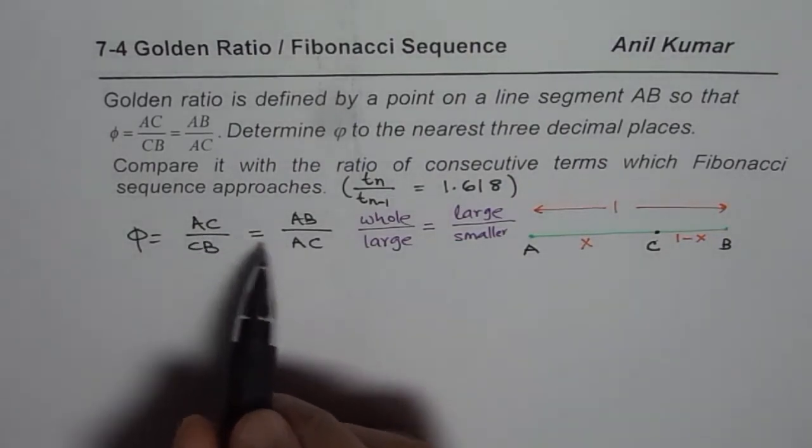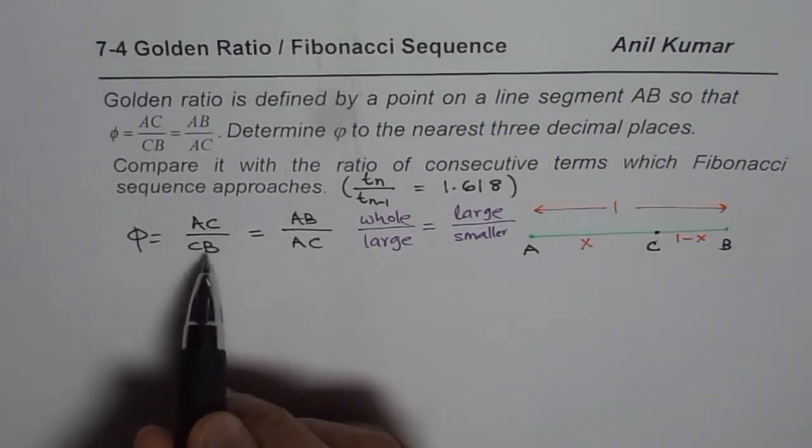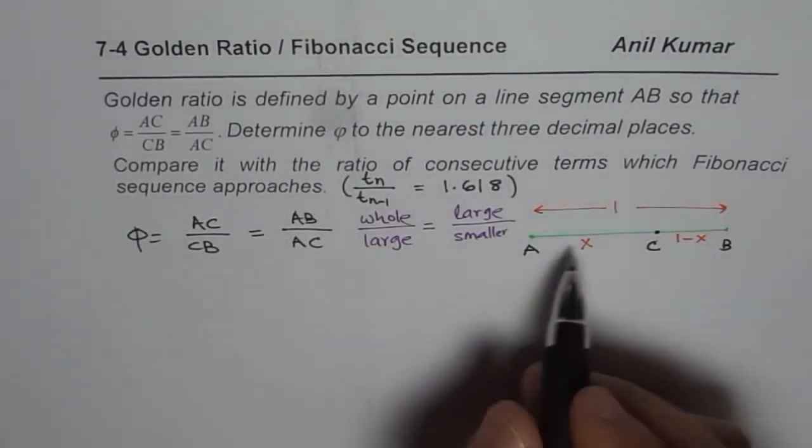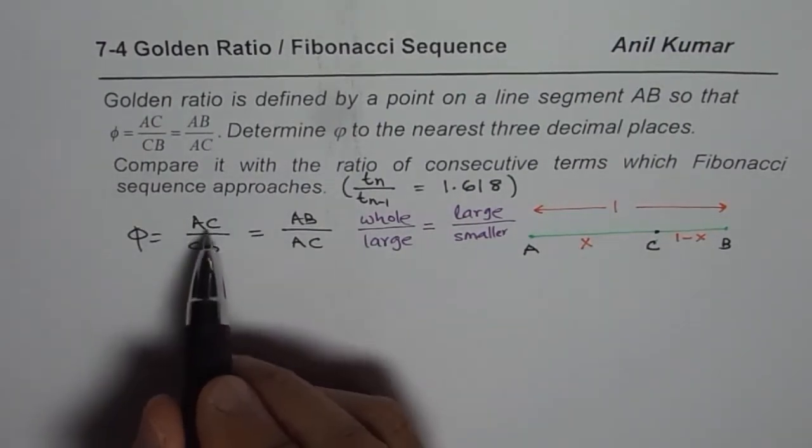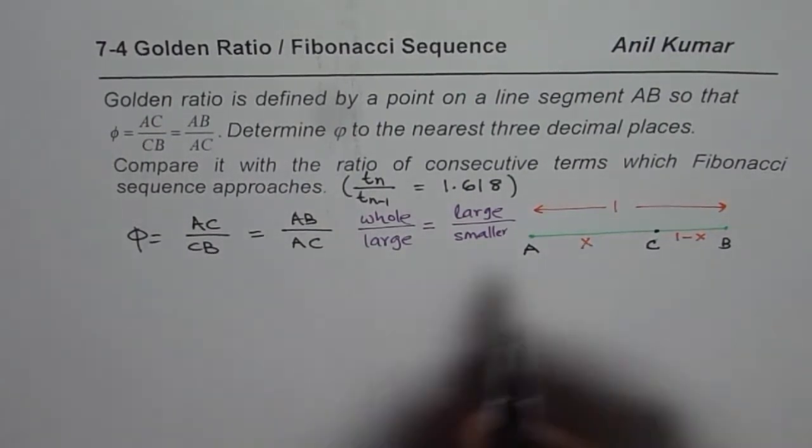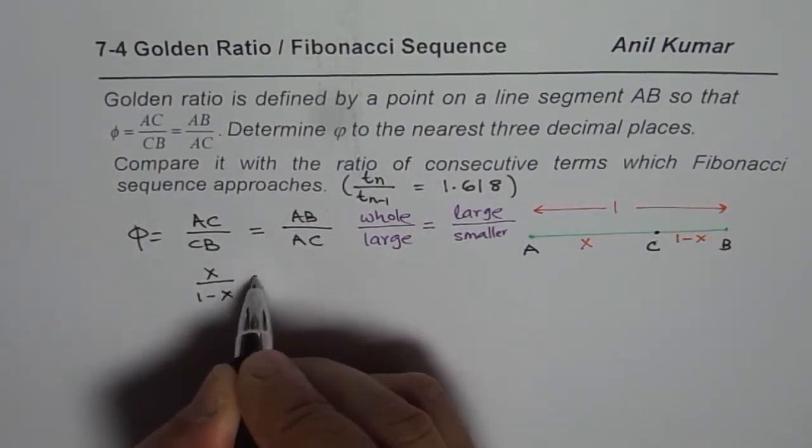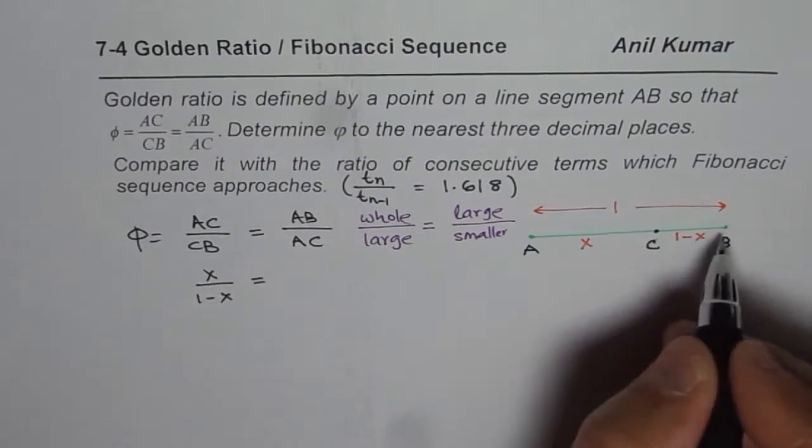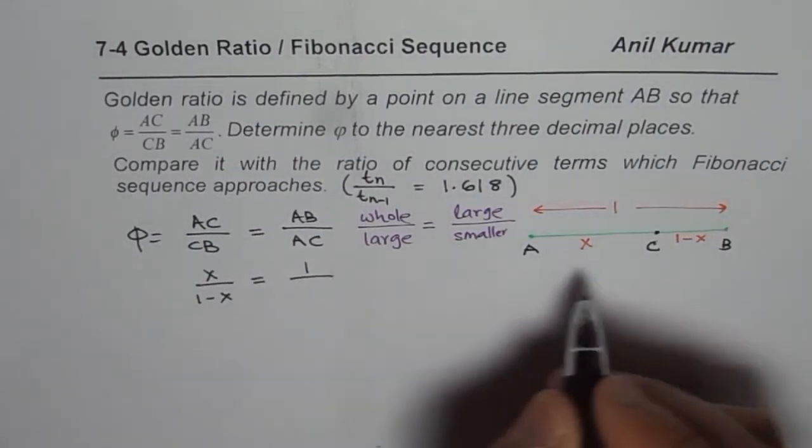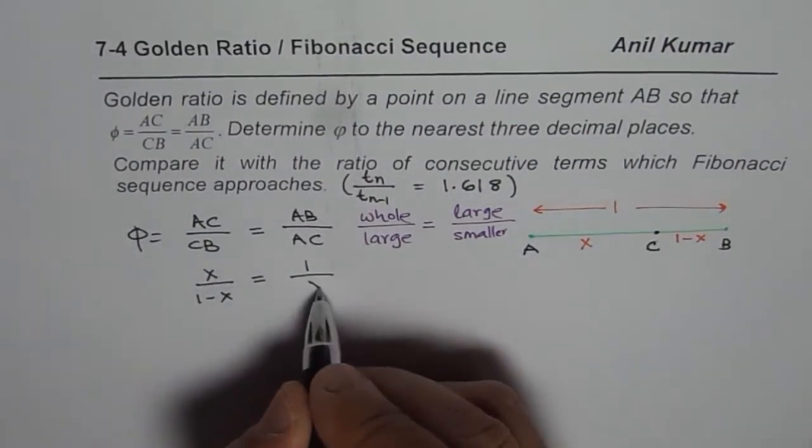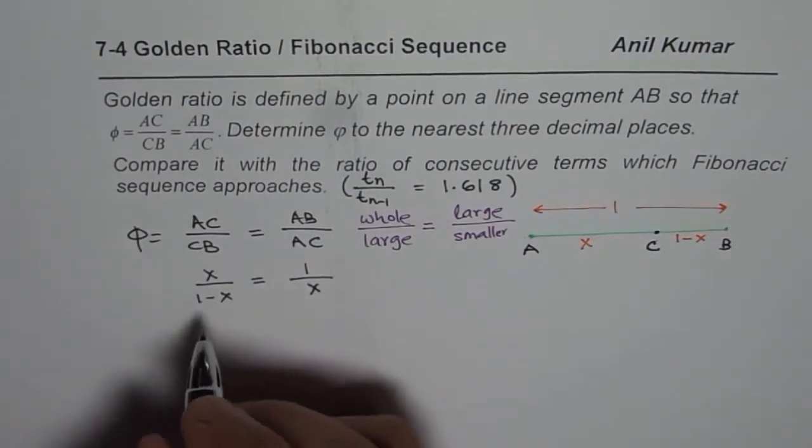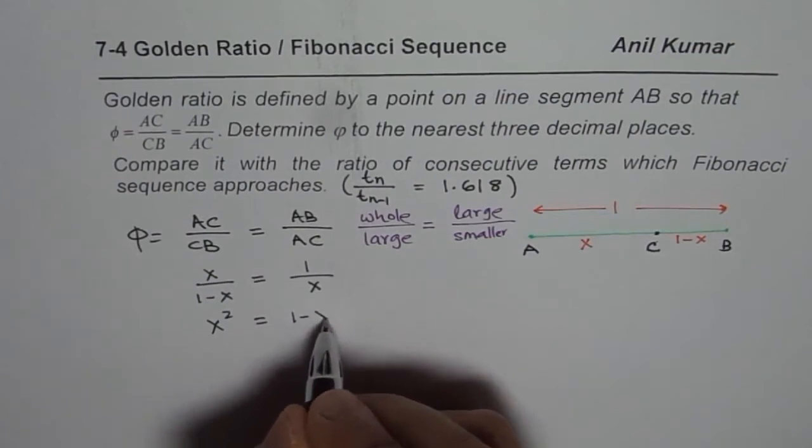Now, we'll place these values in this ratio and then find what phi is. So what you get from here is, if I cross multiply, I get, or let me write the ratio first. AC is X and CB is one minus X. So we get X over 1 minus X is equals to, AB is the whole thing, which is one, and AC is the larger part, X.